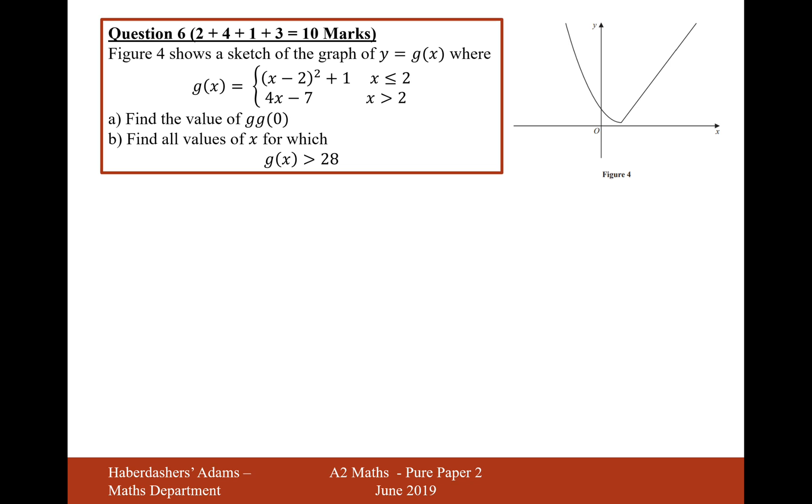Figure 4 shows a sketch of the graph y equals g of x, where g of x is equal to two different functions for a different portion of its graph. For the values of x below 2, so it looks like this here is the point 2, for that value it's x minus 2 squared plus 1.